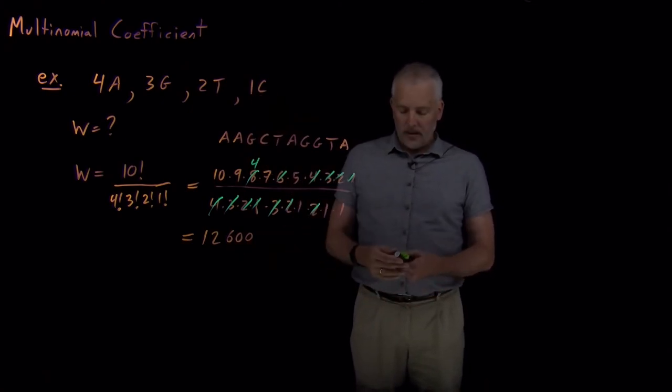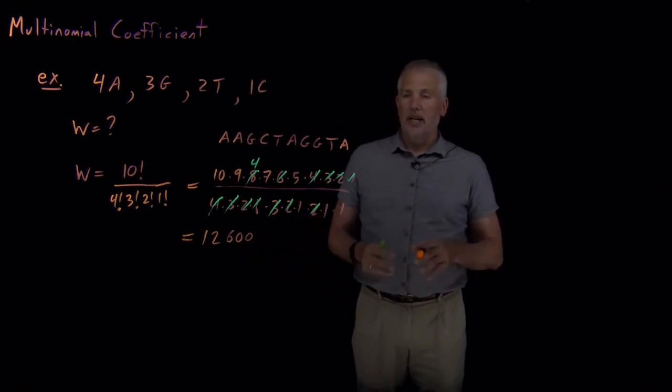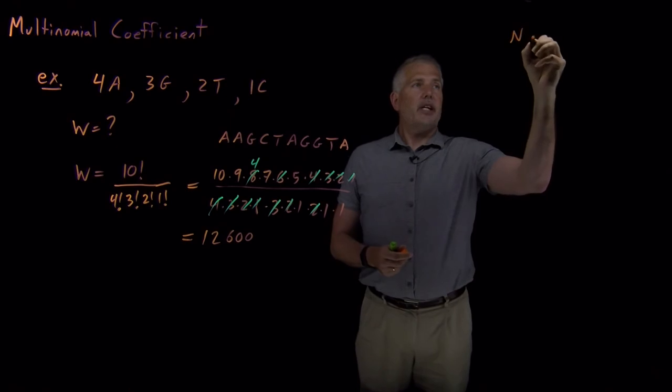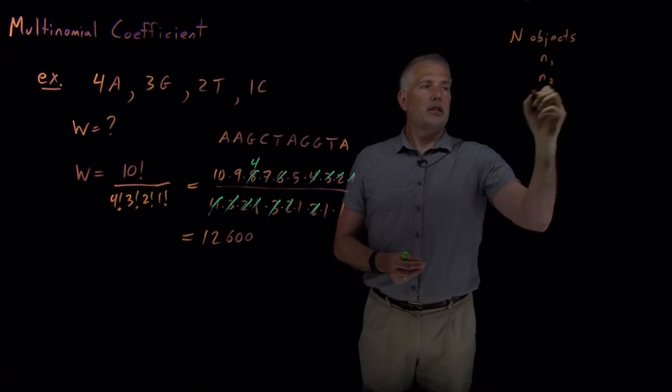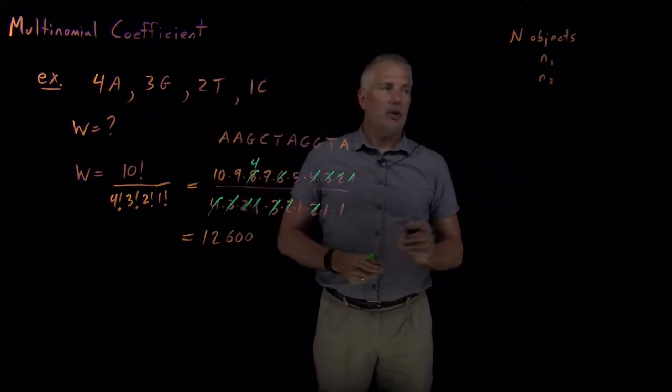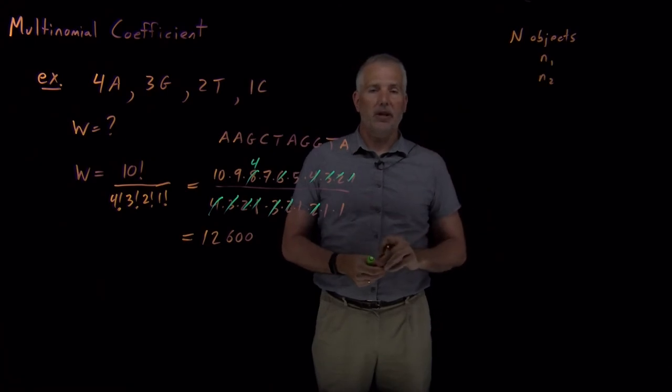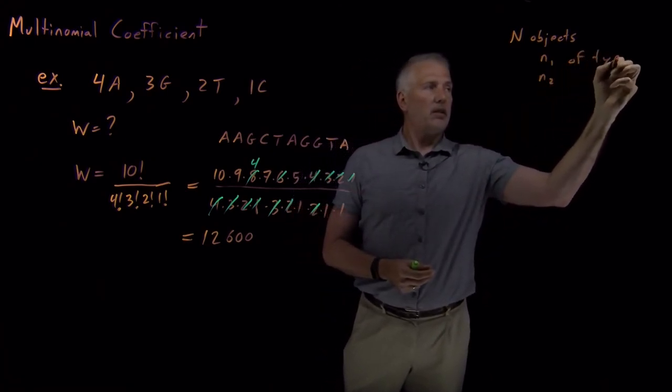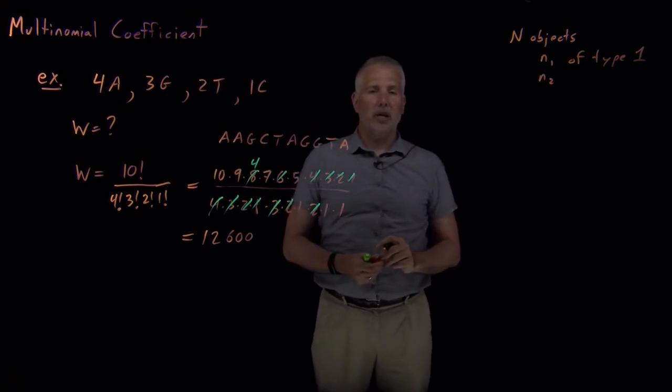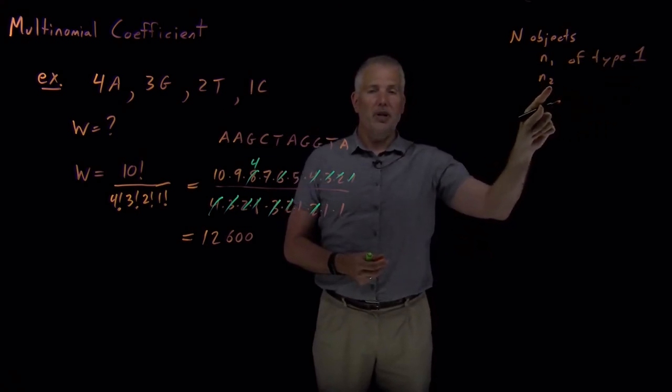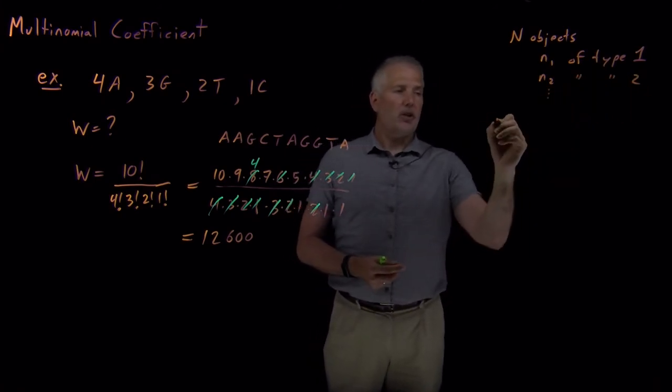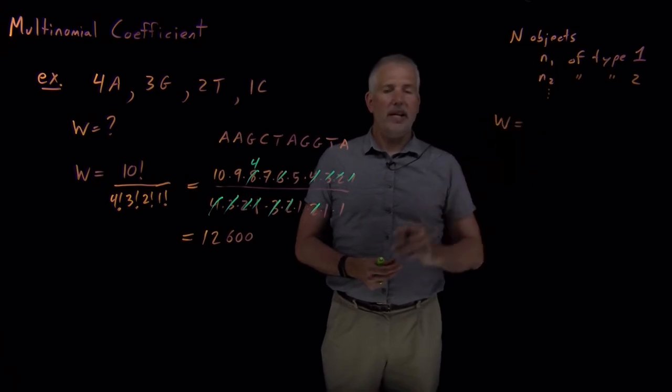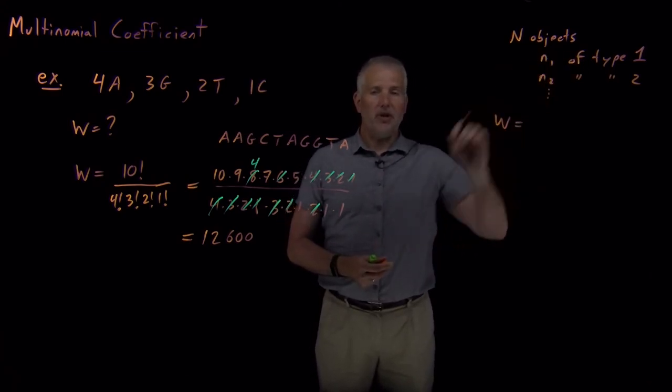More generally, this is an example of a question where I say I have a total of n objects, n sub 1 of type 1 that are all indistinguishable from one another, I can tell 1's apart from 2's but I have n2 of type 2, they're indistinguishable from one another, and so on. And I would like to know what is the total number of ways of arranging those objects where some of them are indistinguishable from each other, and I have more than just two types of object.